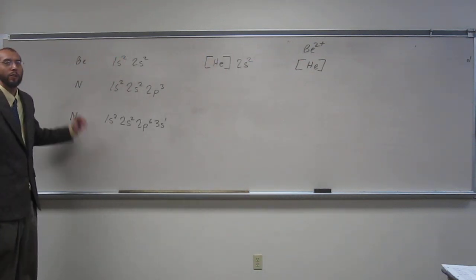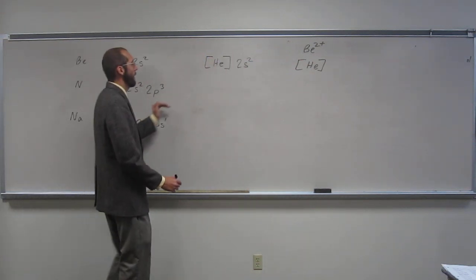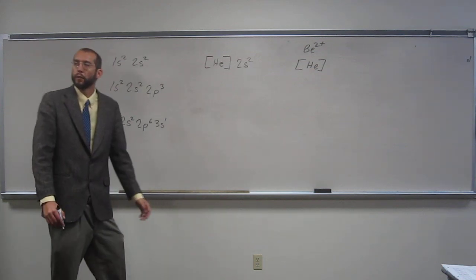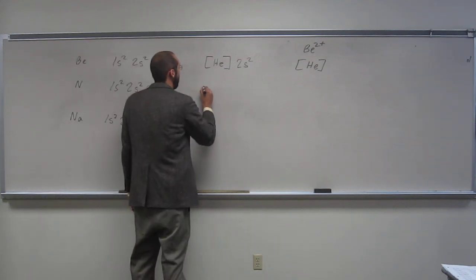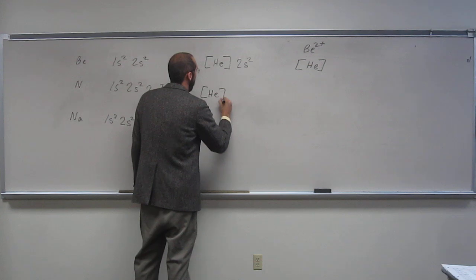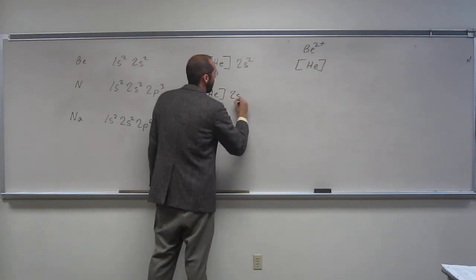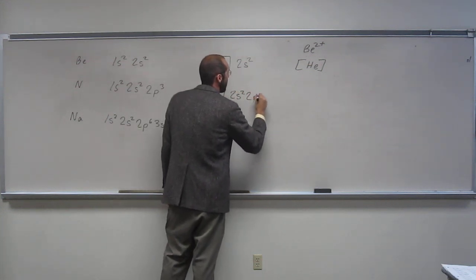Okay, so let's do the same for nitrogen. What would be the condensed electron configuration? Helium, start there, and then 2s2, 2p3.